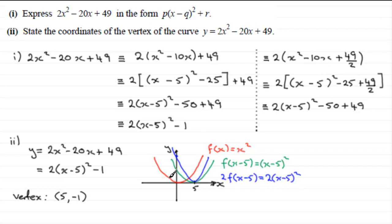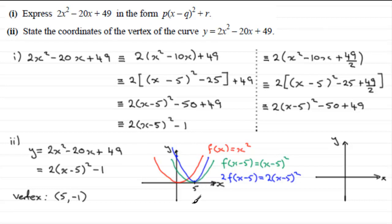Finally, subtracting 1 translates the blue graph down one unit. The point that was at (5, 0) is now at (5, negative 1). This point is called the vertex.